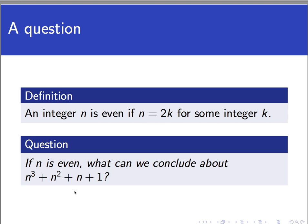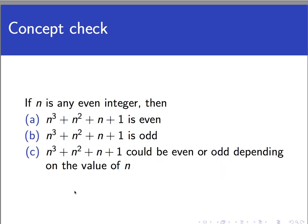The conjecturing part I'm going to leave to you as a concept check. So I want you to take several even values of n, skip the odd ones because this situation only calls for even integers for n, and compute n cubed plus n squared plus n plus 1 and see what happens each time. Then I want you to pause the video and identify the answer that seems most correct. Is it even? Is it odd? Or could it be either even or odd depending on the value of n?